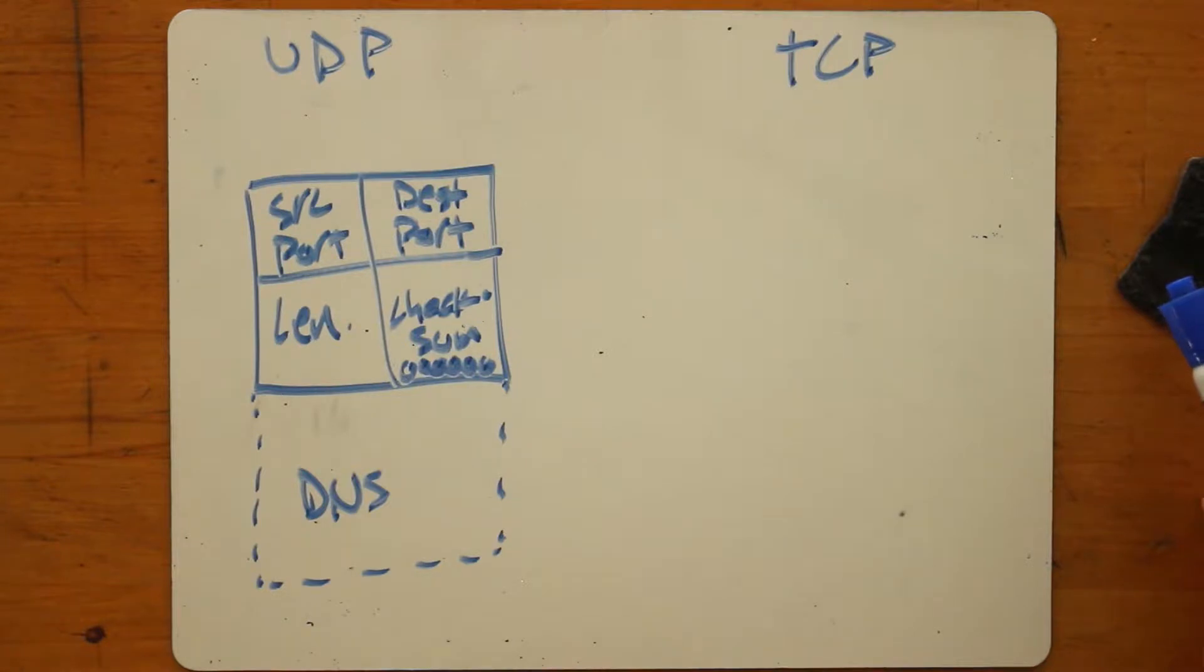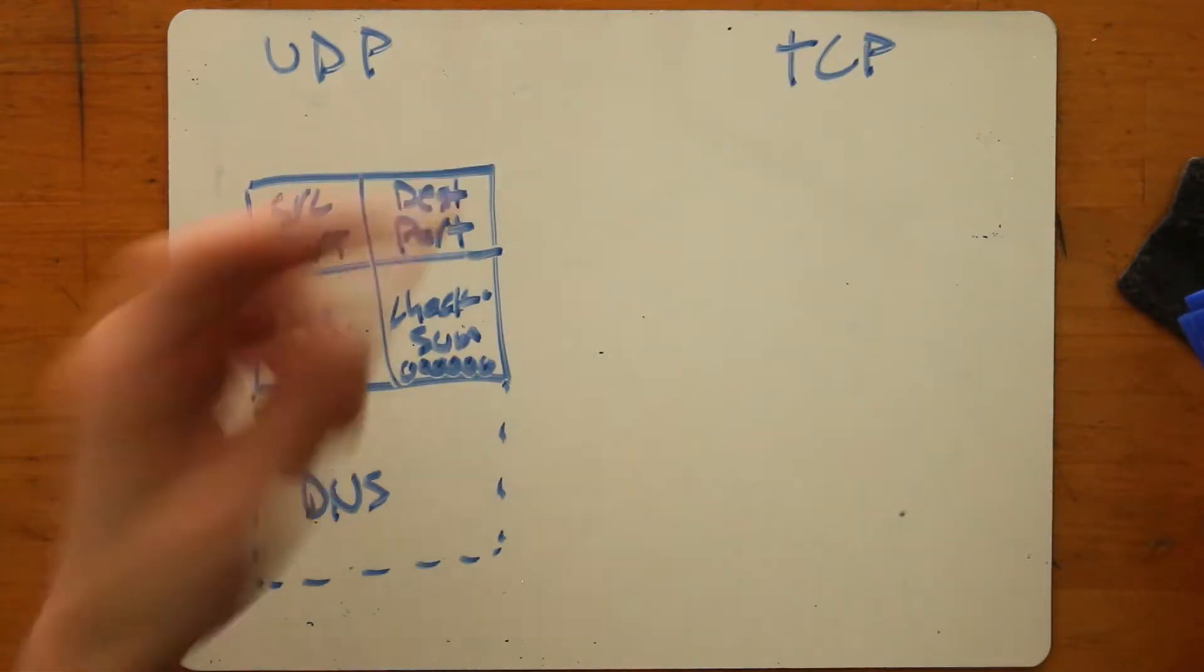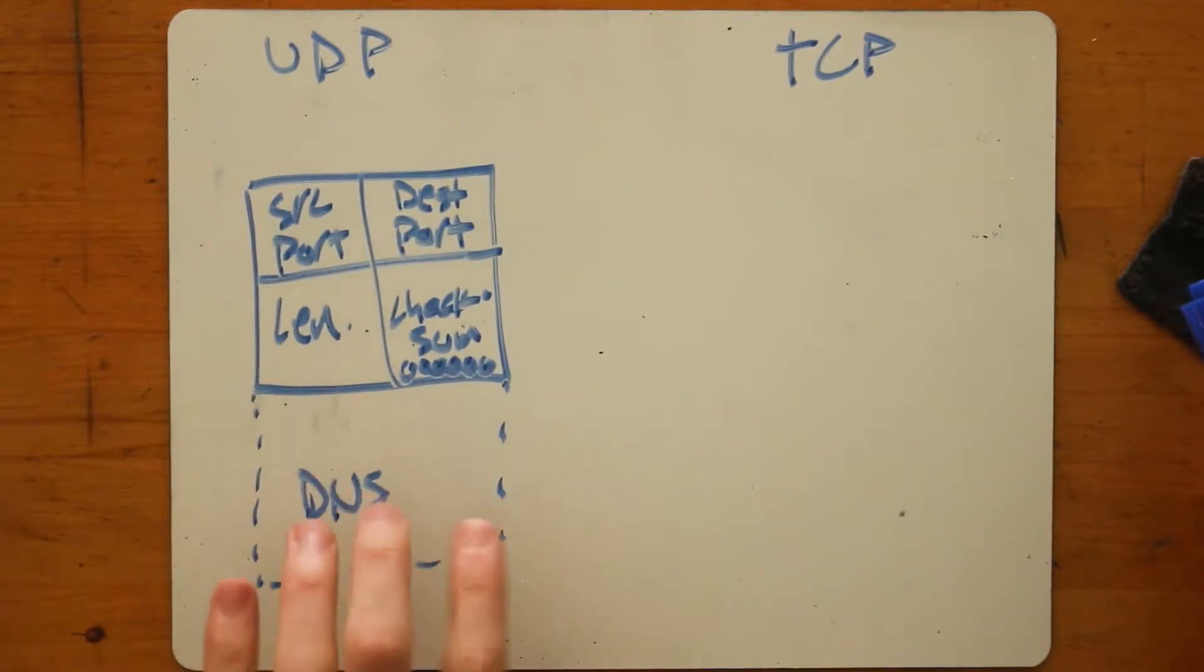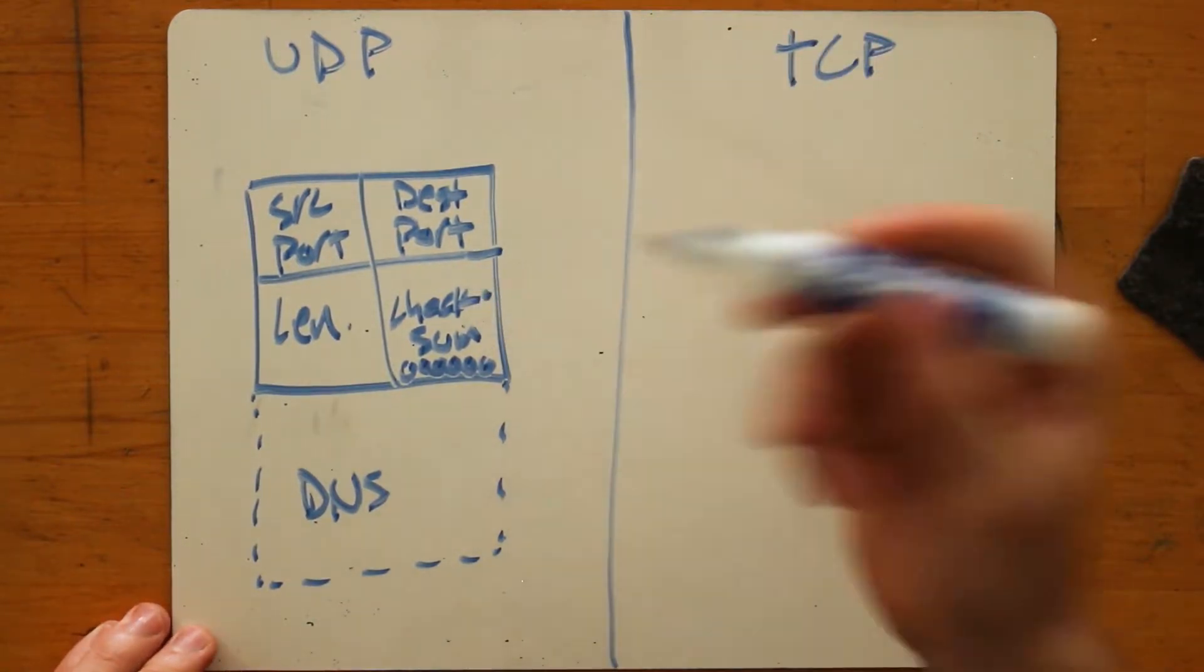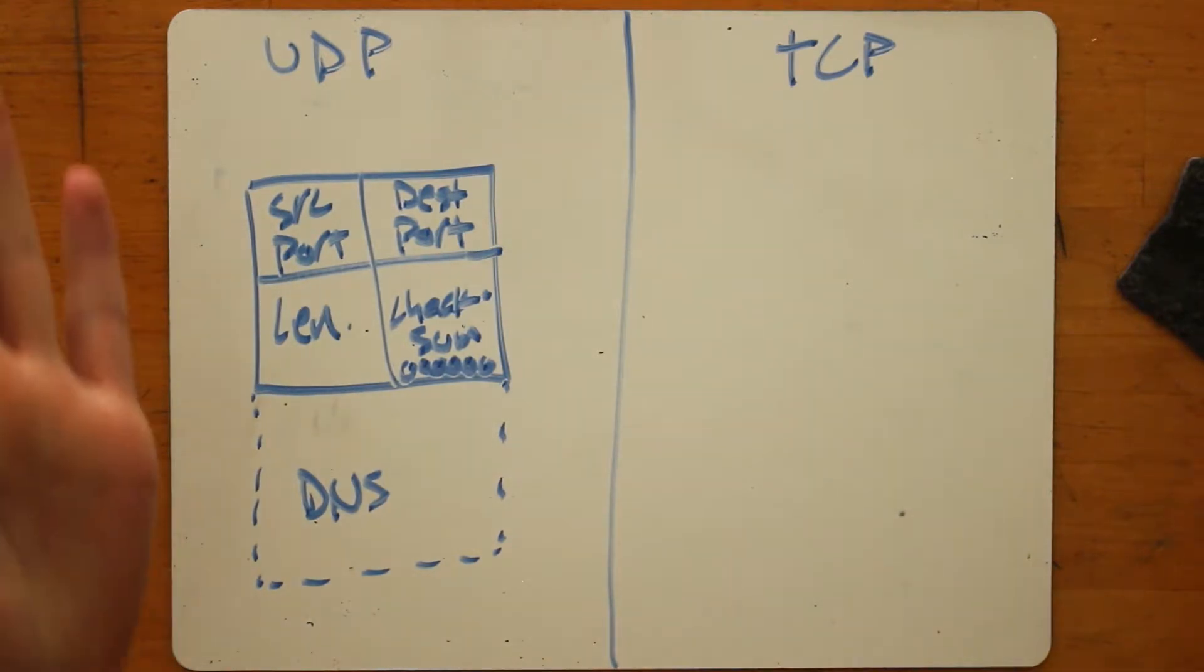Okay, so UDP, super simple, all it allows you to do is know where the source and destination ports are, the length of the payload so that you can know how much to read. And it might or might not provide you with the ability to check that the data you received was the data that the person sending you data actually sent.